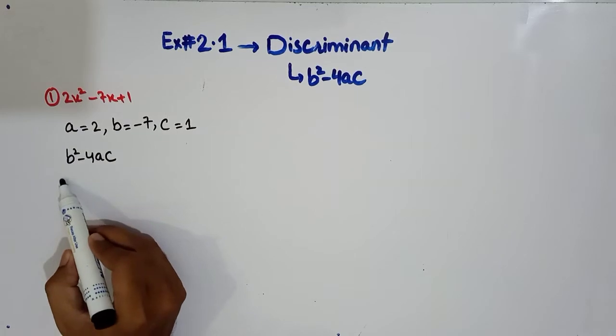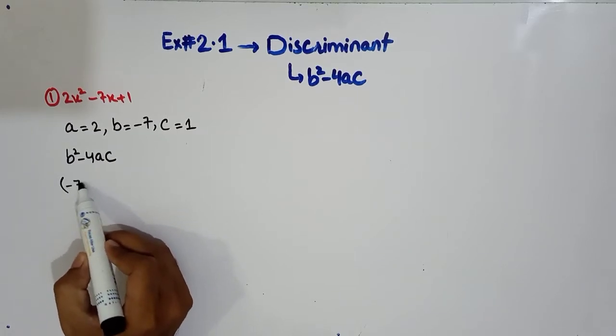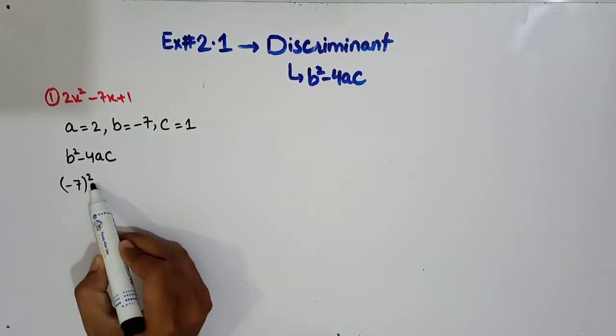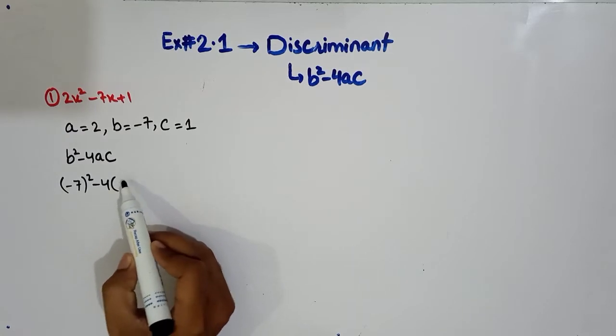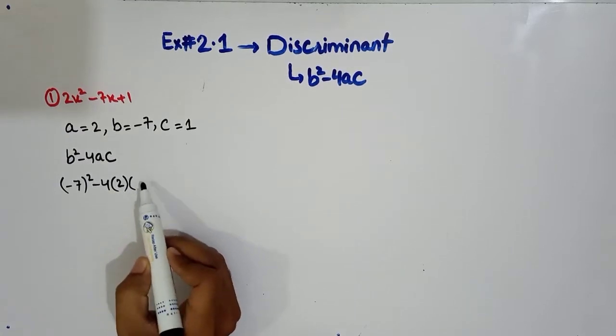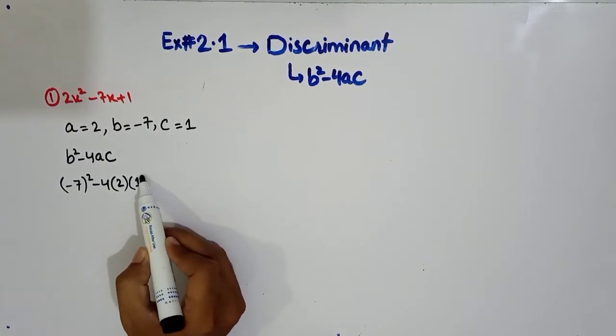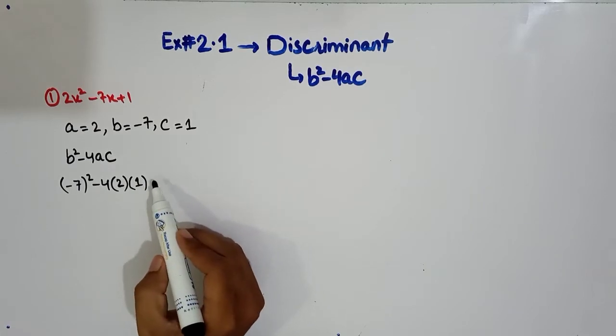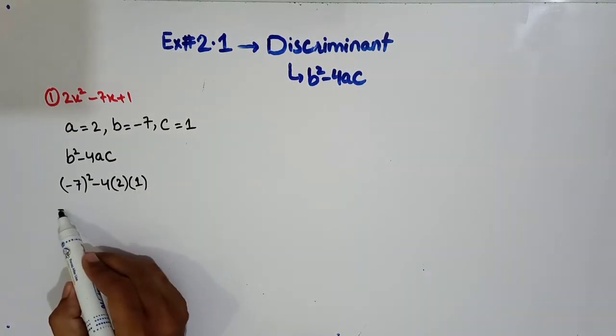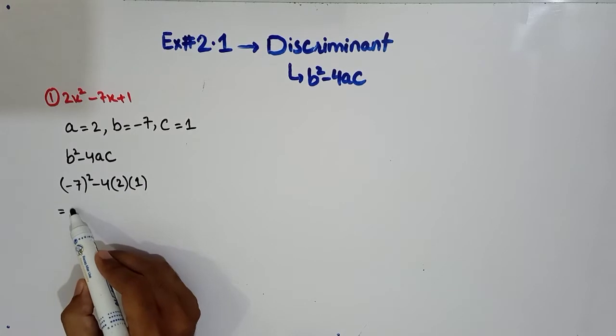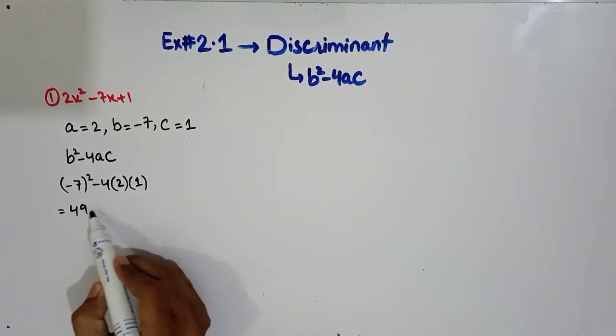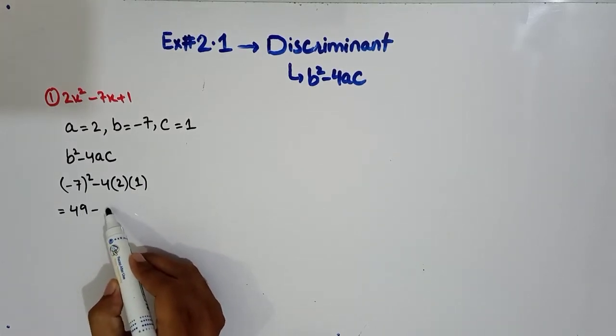Then you have to put these values, and here we have to put B value and A and C value. Now just simply we will solve these values. Seven square is 49 and four to the eight, it will be 8.